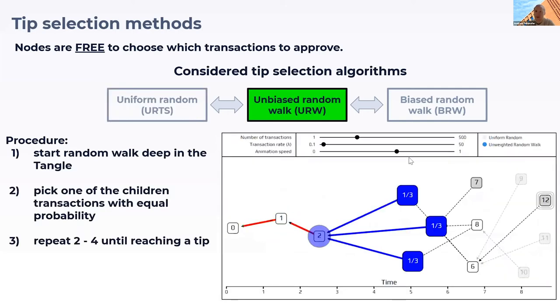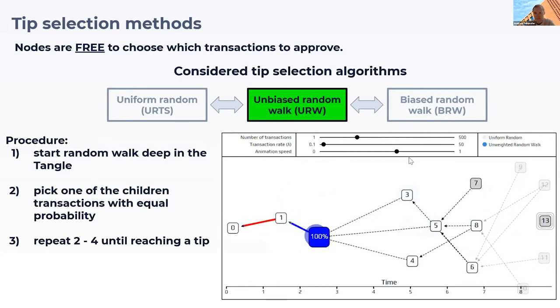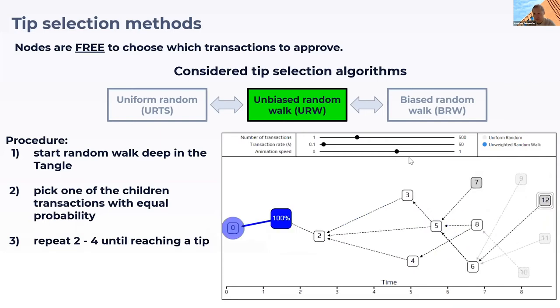In the unbiased random walk, the node starts a random walk in the past of this Tangle, and at each step it chooses one of the children at random till it arrives at one of the tips and selects that for approval.